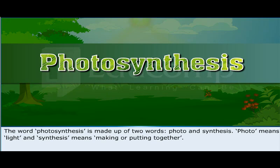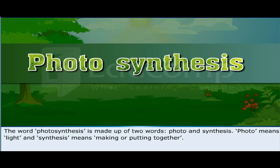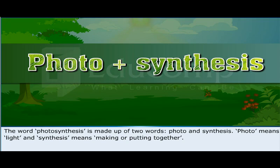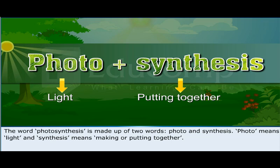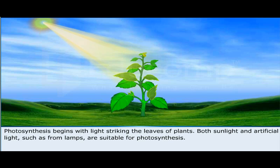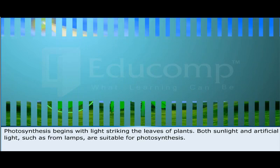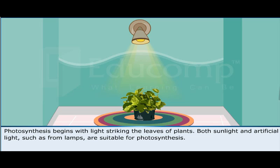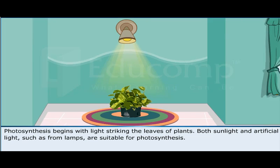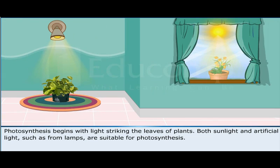The word photosynthesis is made up of two words: photo and synthesis. Photo means light and synthesis means making or putting together. Photosynthesis begins with light striking the leaves of plants. Both sunlight and artificial light, such as from lamps, are suitable for photosynthesis.